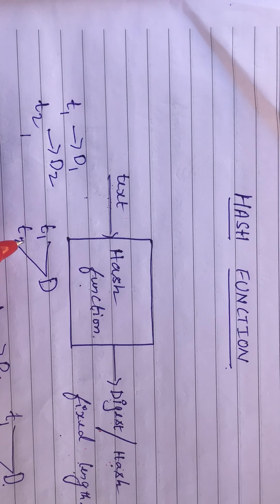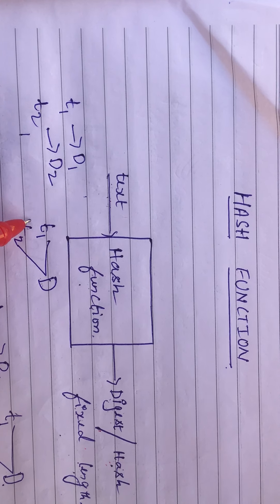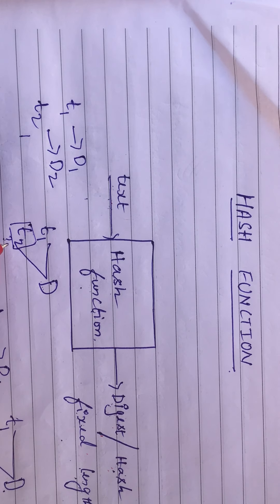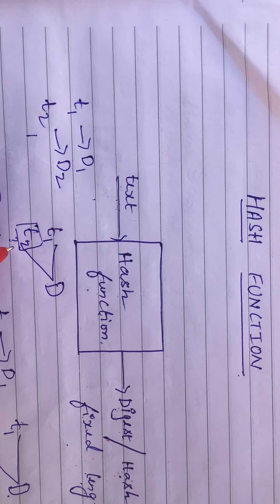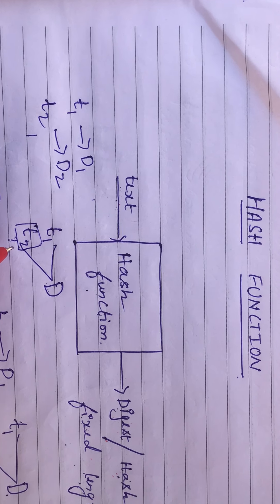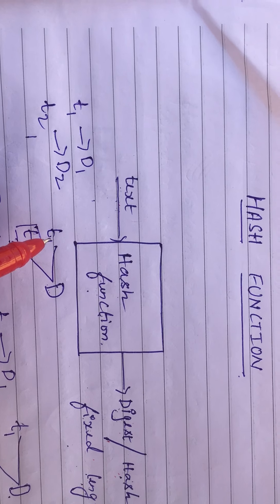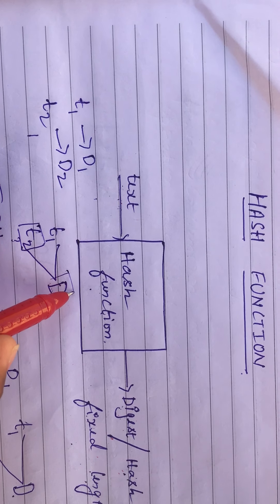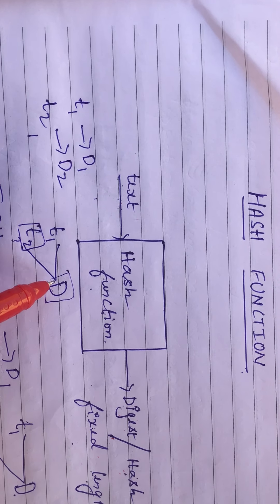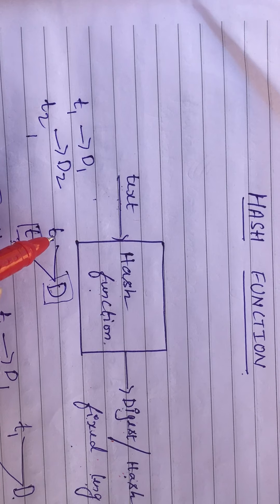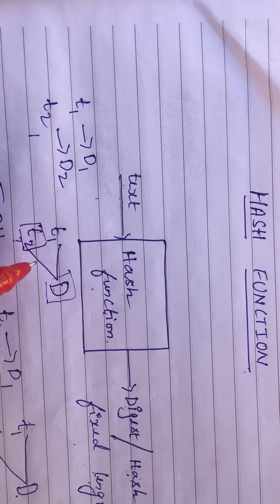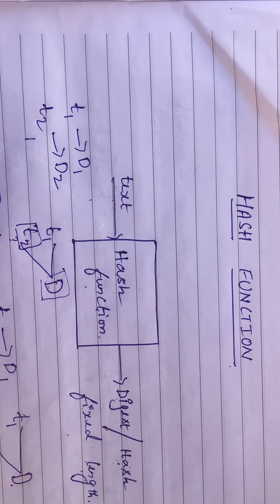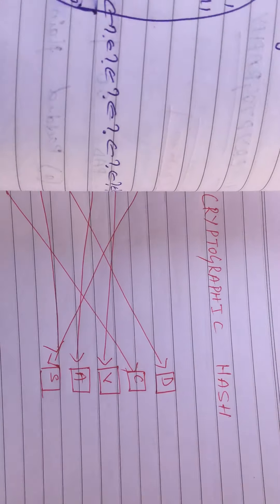Now, if text t1 gives digest d, and we are asked to find text t2, this is called a weak collision. Whereas if only the digest d is given and we are asked to find both t1 and t2, then it is called a strong collision. We are going to see these in detail now.